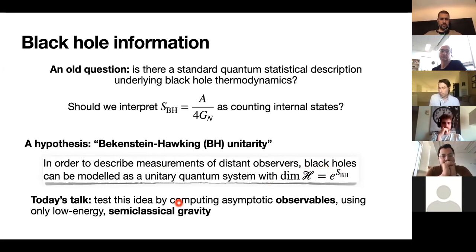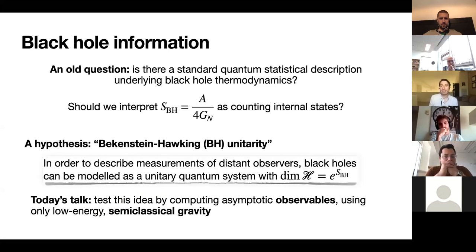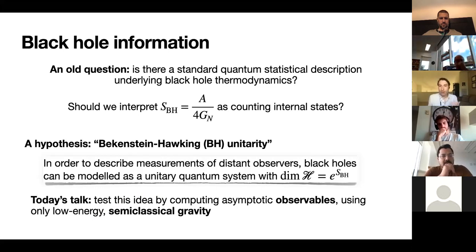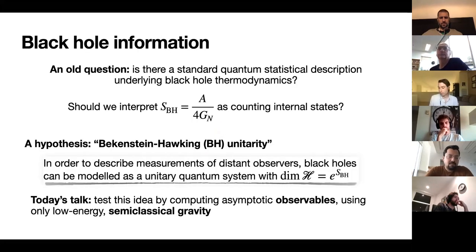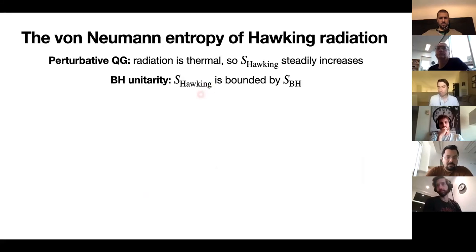Today I want to test this idea by really looking at observables — things that you can really in principle measure by doing some experiments — and using only low energy semi-classical gravity. In particular, I don't want to make any assumptions about having some duality. I'm not going to use anything like that; I don't want to use any ideas from string theory or other UV completion that's more speculative. I really want to use the things that we know are in nature: general relativity and quantum mechanics. The old response to this is that semi-classical gravity is not compatible — before about 18 months ago, this would be the standard answer.